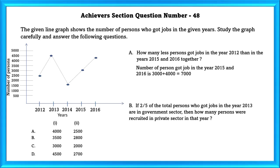Now, how many less persons got their job in 2012 than in 2015 and 2016? Number of less persons who got their job in the year 2012 than in 2015 and 2016 together is 7,000 minus 2,500, that is 4,500.